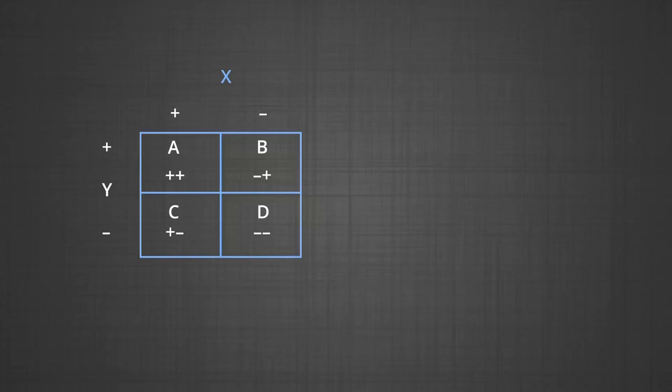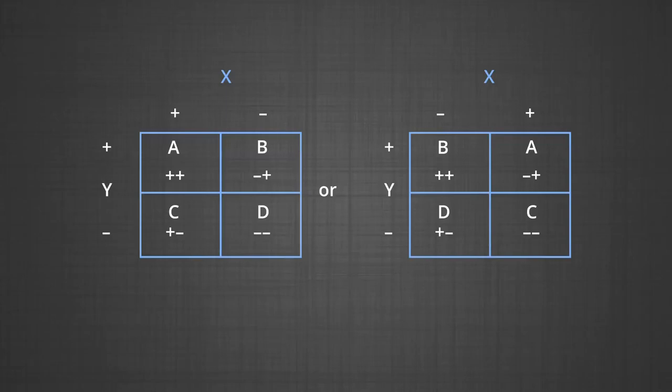The generalized model of designating the cells is given below. We have the first contingency table showing X with plus-minus, and on the left side we have Y variable showing plus and minus. The signs in the four cells are plus-plus, minus-plus, plus-minus, and minus-minus. Similarly for the second variable, we have X on top and Y on the left side with cells B (plus-plus), A (minus-plus), D (plus-minus), and C (minus-minus).